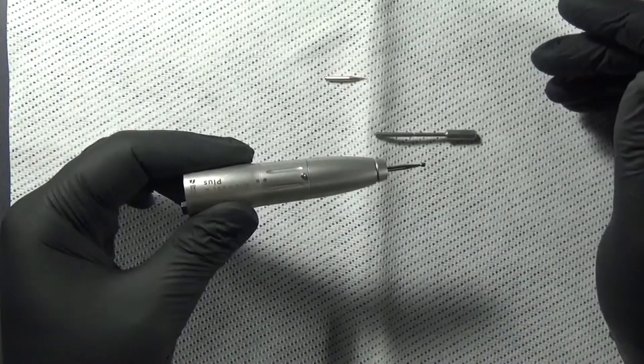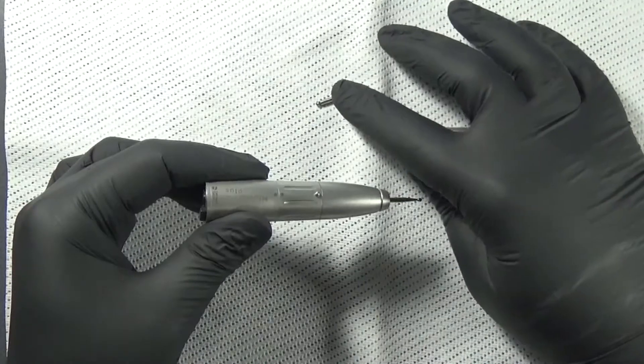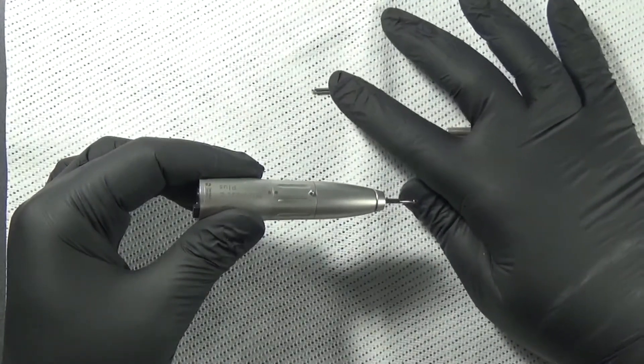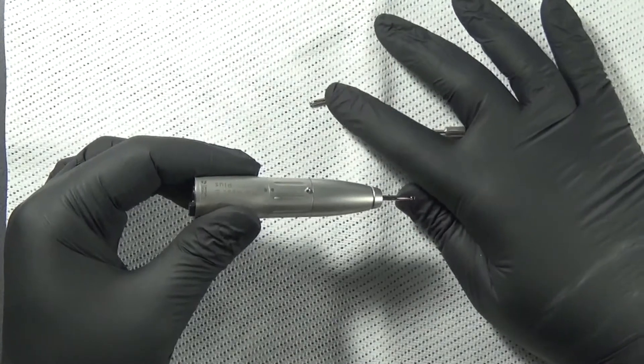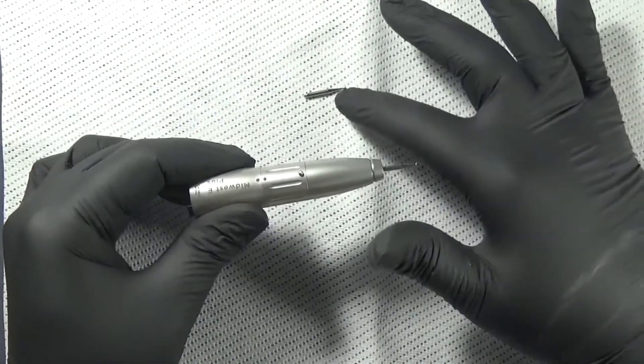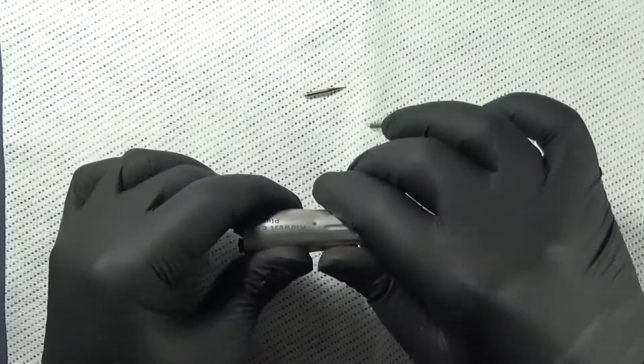Say we have a certain burr but we have it in a latch type burr here. It could be latch or latch OS oral surgical that would be a little bit longer, and we want to insert that into our straight attachment to use that burr tip. Let's go ahead and turn the dots away from each other.